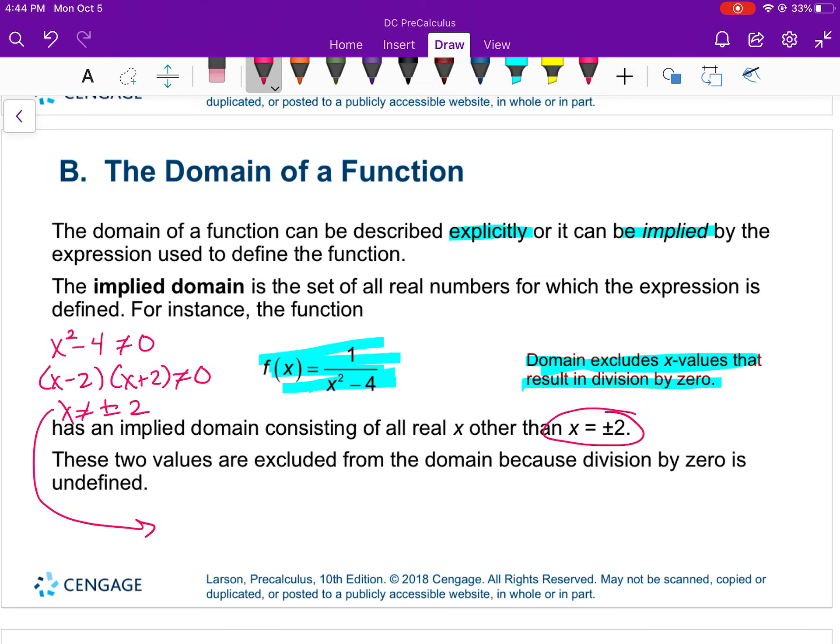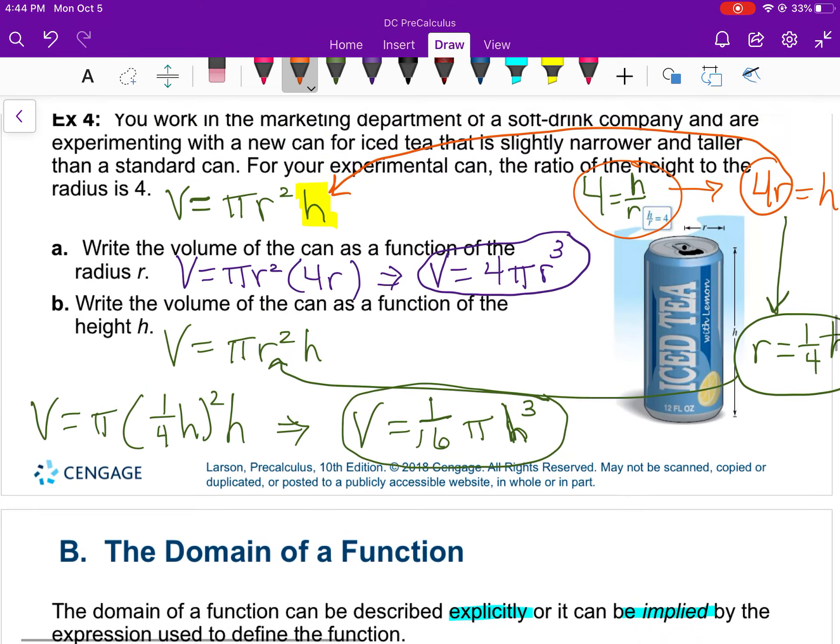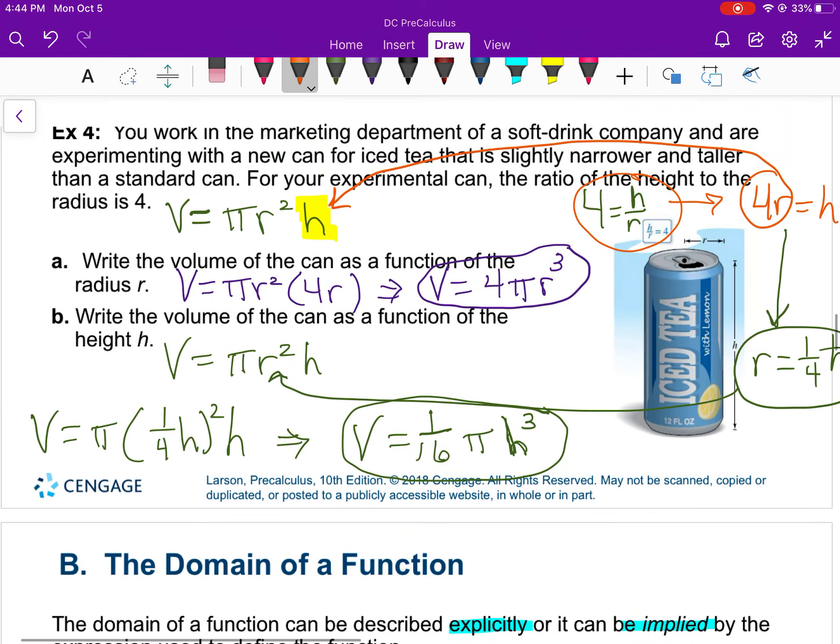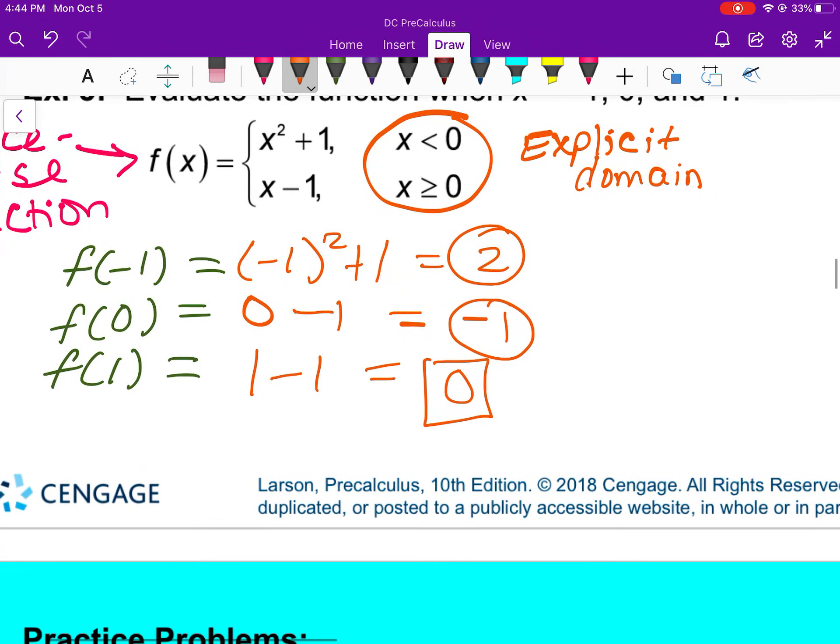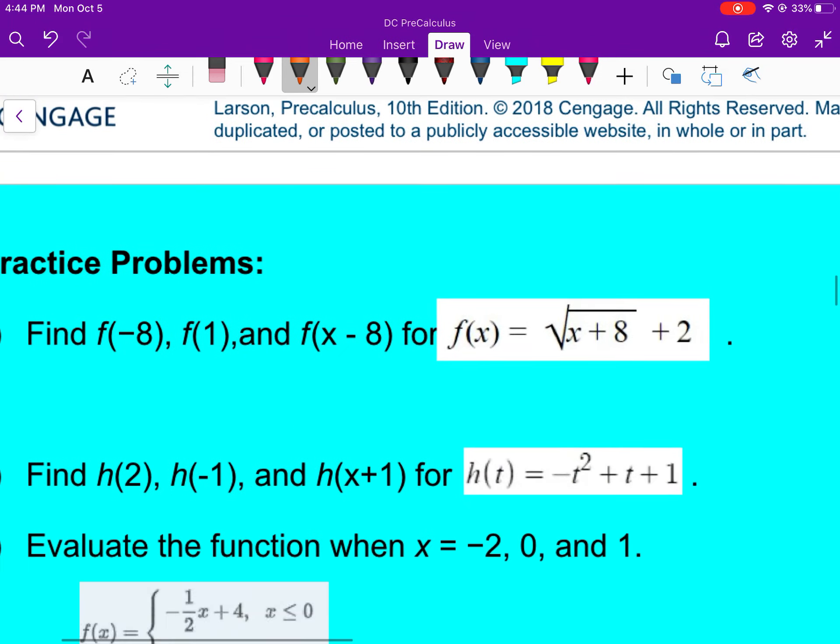And we've written that before with interval notation. So that function has an implied domain. Functions with a denominator with x in it could have an implied domain like this one. Up here, when we saw this function right here, this is called an explicit domain. So it's given to you. Explicit, the domain will be written with the problem. Implicit, it's understood to be there.